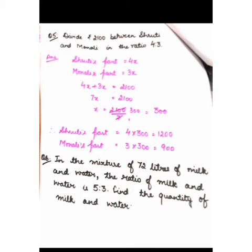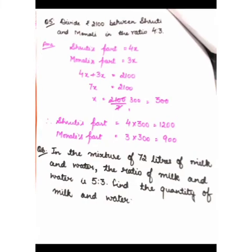Therefore, Shruti's part = 4x = 4 × 300 = Rs. 1200, and Monali's part = 3x = 3 × 300 = Rs. 900. So Shruti gets Rs. 1200 and Monali gets Rs. 900.